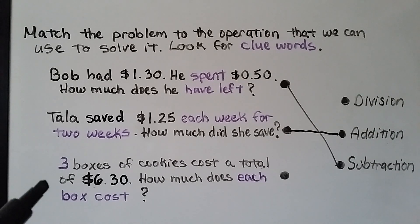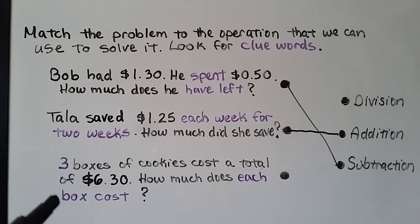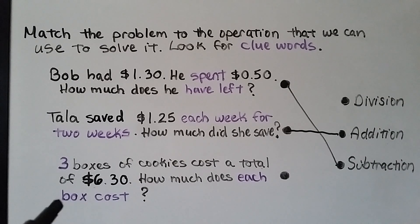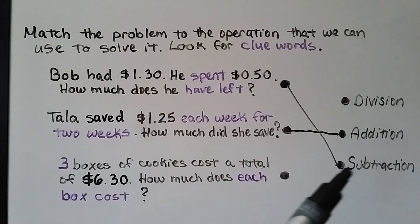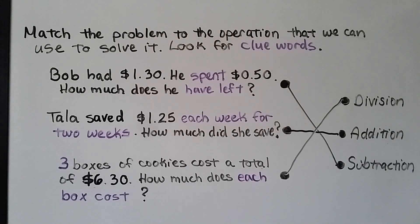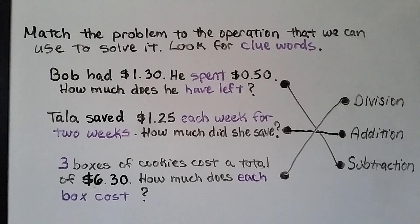The next problem says: three boxes of cookies cost a total of six dollars and thirty cents — how much does each box cost? If three boxes cost $6.30 and we need the price of one box, we use division. We divide six dollars and thirty cents by three to find the price of each box. Don't let problems like this trick you — it is division.